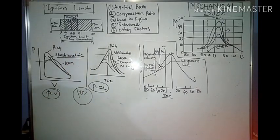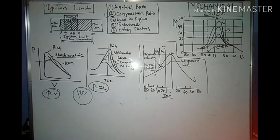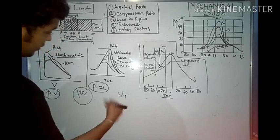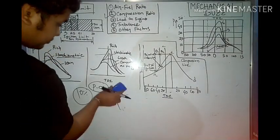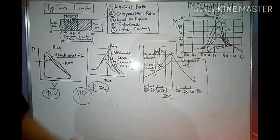So the air-fuel ratio has a great impact on combustion speed, as we can portray with these diagrams. Moving to the second factor — compression ratio. Compression ratio is the ratio between the total volume and the clearance volume. If you have a good compression ratio, you can achieve better flame speed. A higher compression ratio leads to better combustion speed.